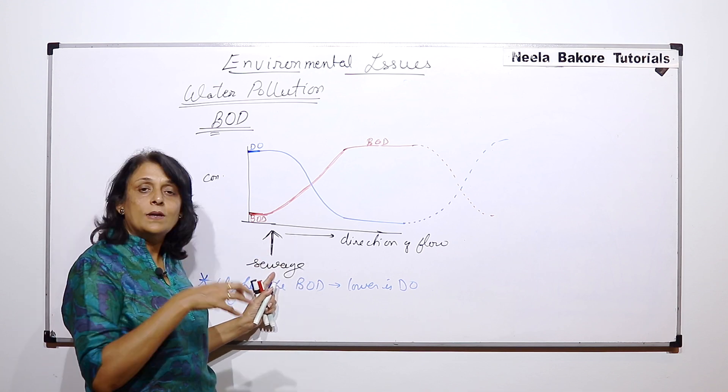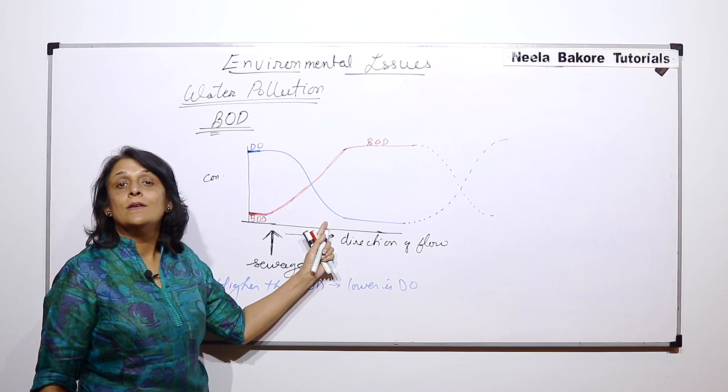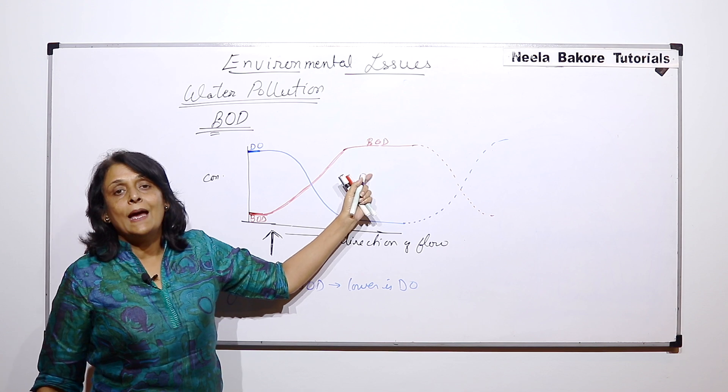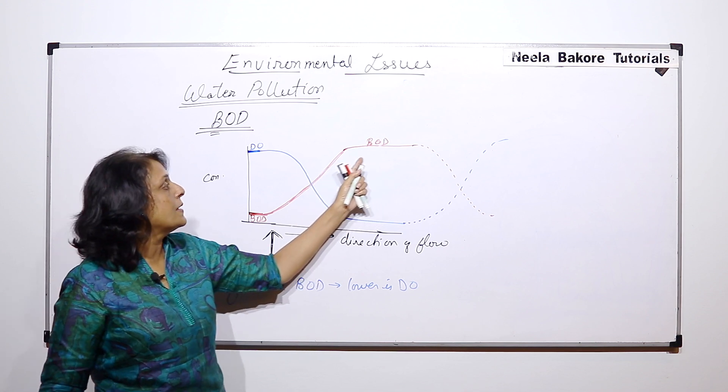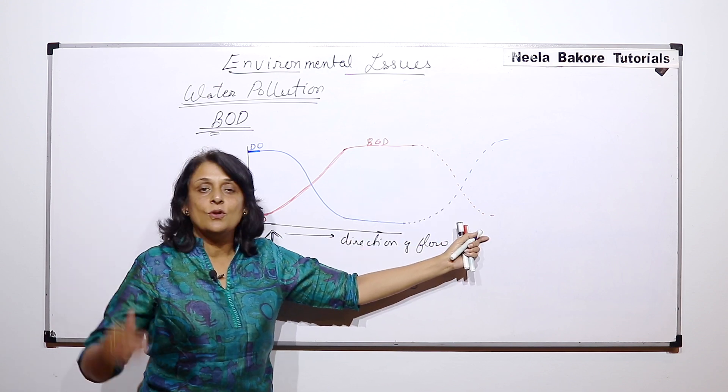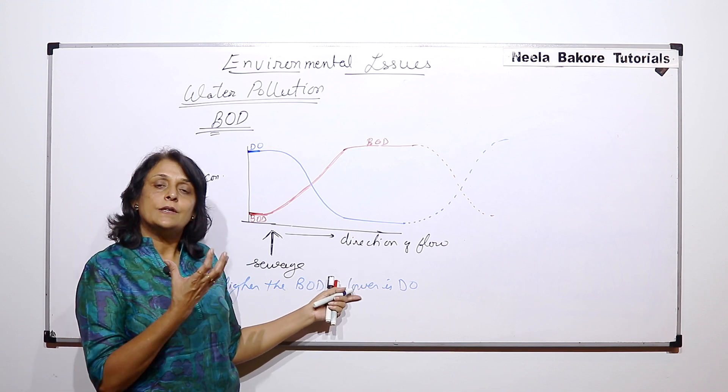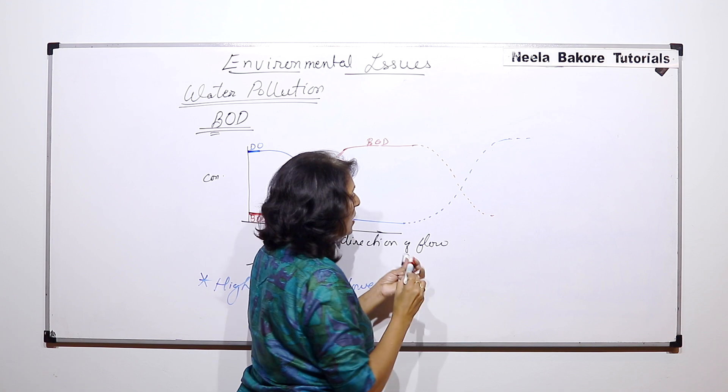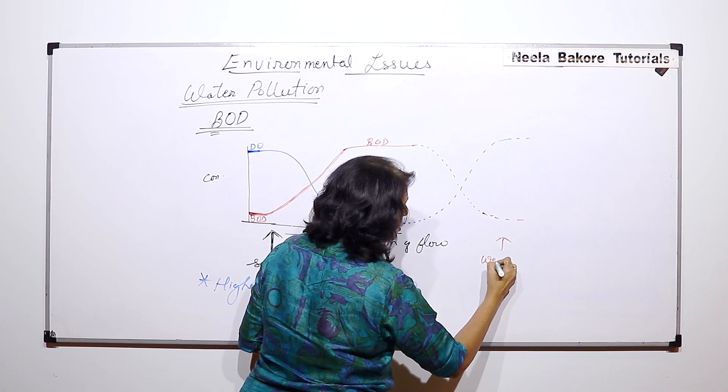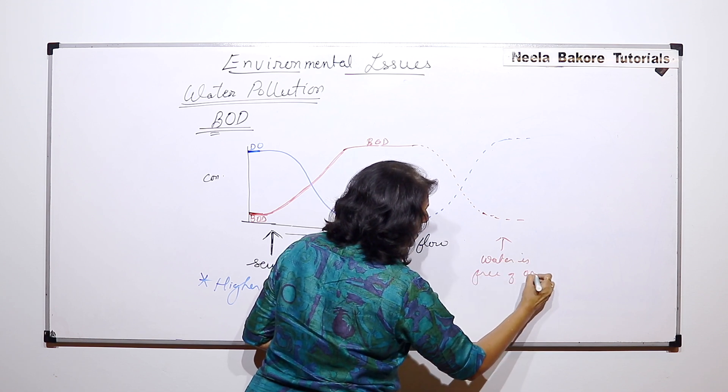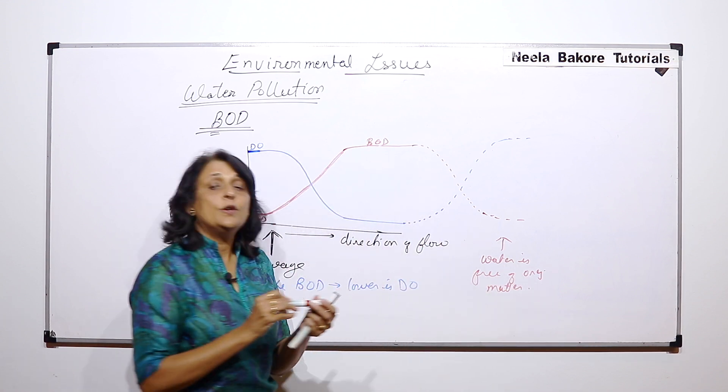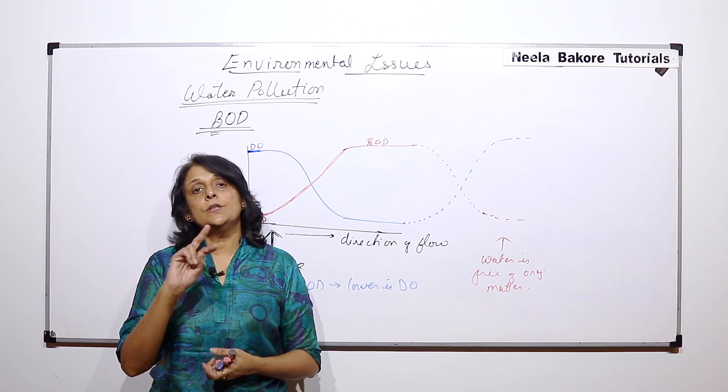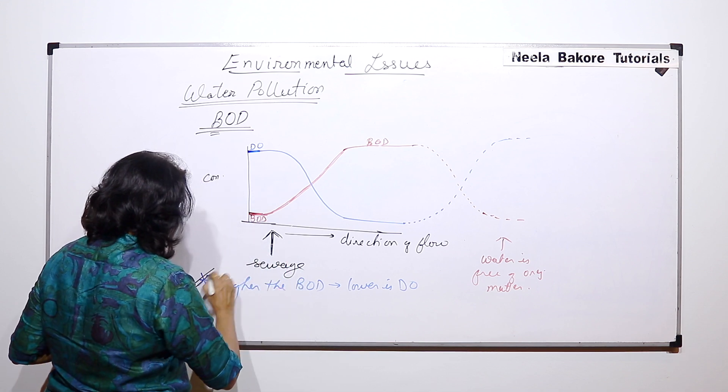As soon as organic matter is added, dissolved oxygen decreases and biological oxygen demand increases. BOD is going to remain high till the organic matter is not completely decomposed. Once the organic matter gets completely decomposed, that demand is going to decline and the dissolved oxygen concentration will increase. Again, this water is free of organic matter, like it was in the beginning before sewage was dumped.